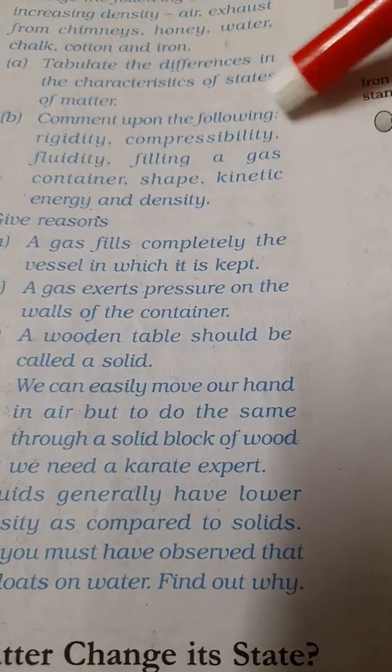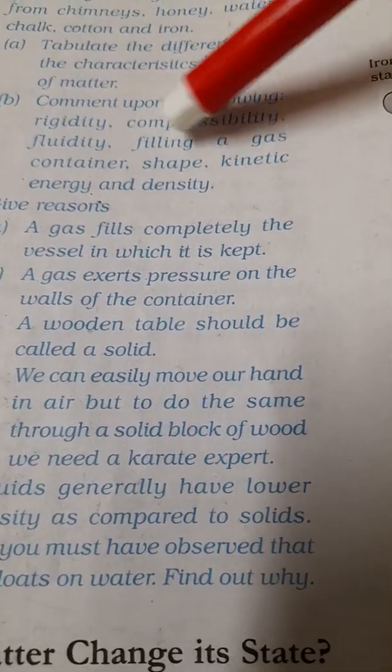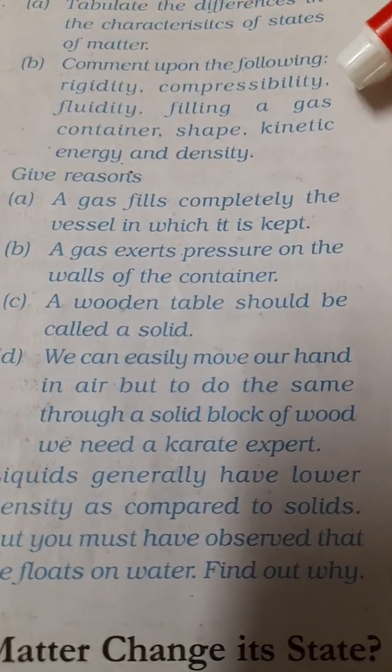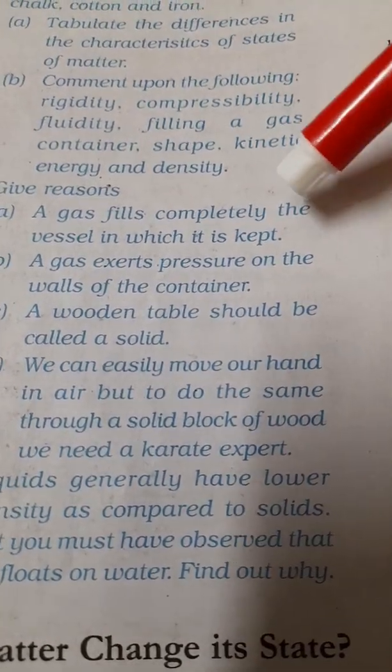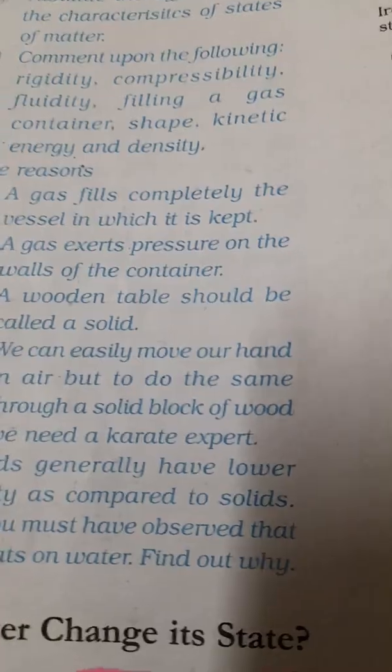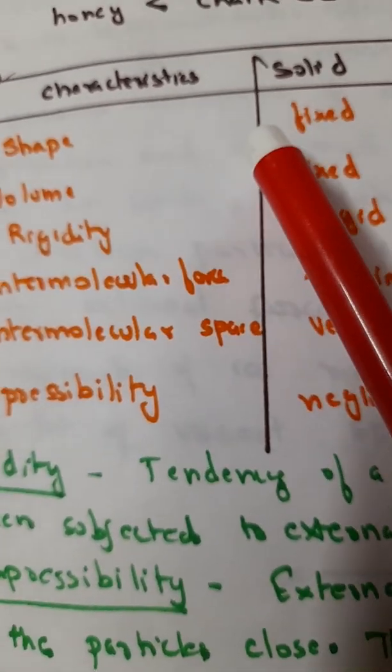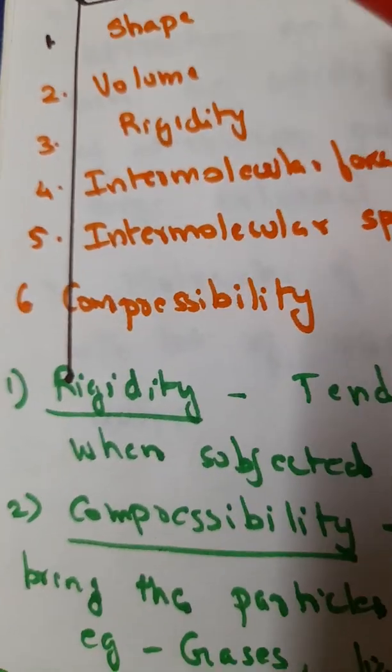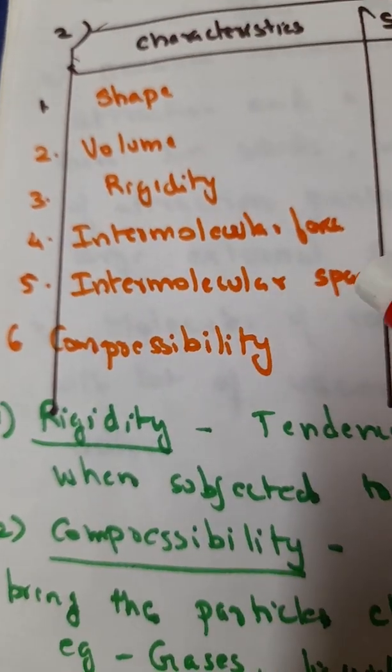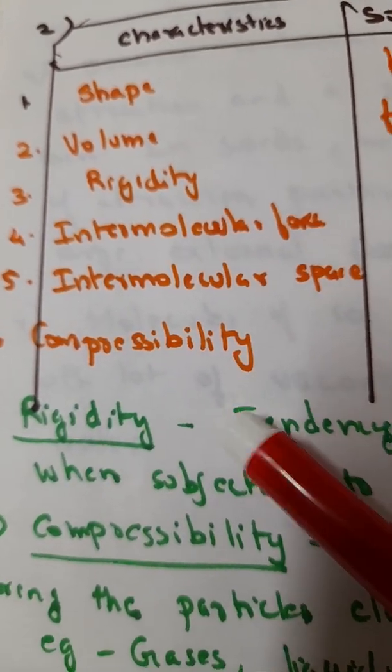Here you can see that you are asked to tabulate the differences in characteristics of states of matter. You have to comment upon the following: rigidity, compressibility, fluidity, filling a gas container, shape, kinetic energy and density. So you can see this chart I have made for you like characteristic: shape, volume, rigidity, intermolecular force, intermolecular space, compressibility.